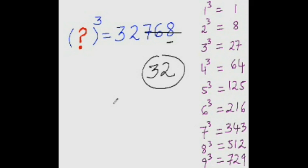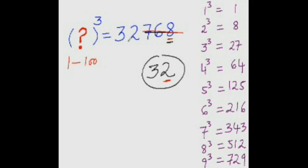I assure you, you will be calculating faster than this, because you would be doing it mentally — I had to write it down for you to see. To find the cube root of any number whose answer lies between 1 to 100, all you need to do is look at the last digit. If the last digit is 8, then put 2 here and strike out the last three digits. Now see the number that is left.